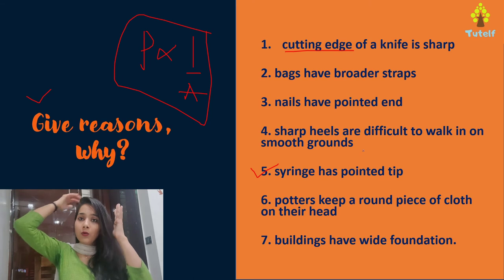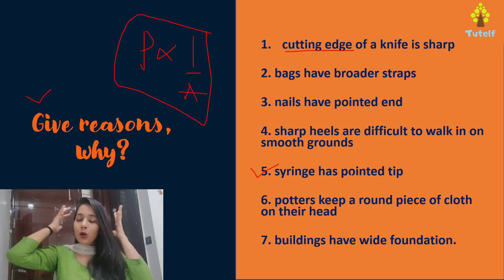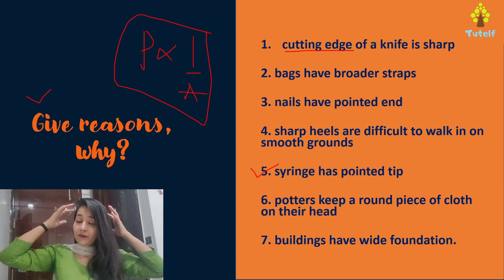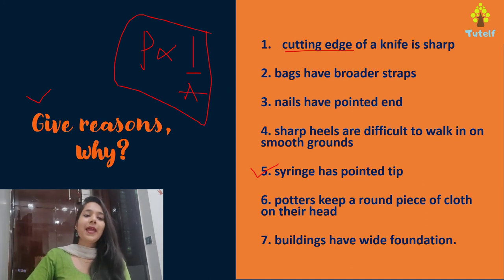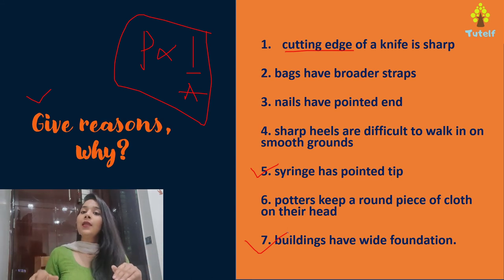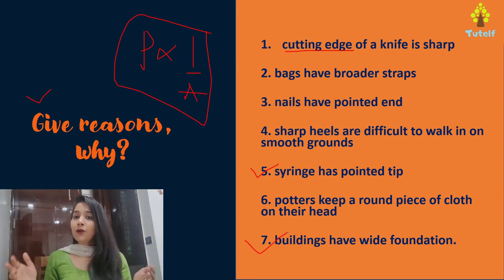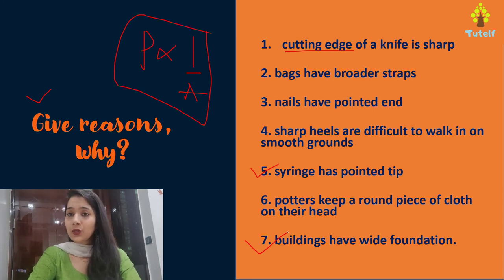Sixth, potters keep a round piece of cloth on their head to increase the surface area, which decreases the pressure applied on the head, since area is inversely proportional to pressure. Seventh, buildings have a wider foundation at the base — a wider foundation gives greater area so the pressure applied on the foundation by the building is less.